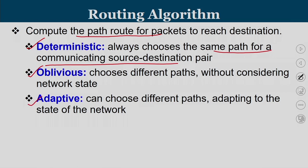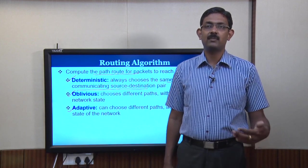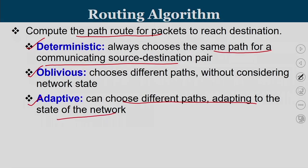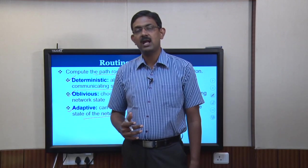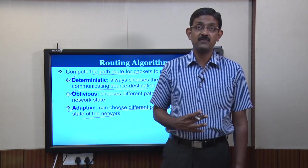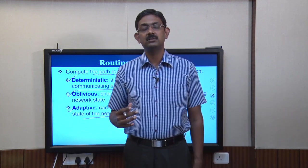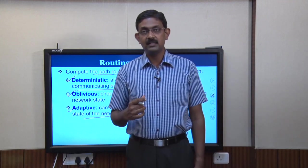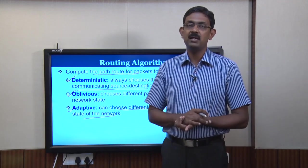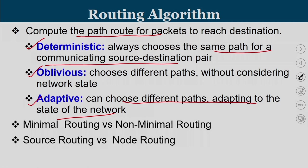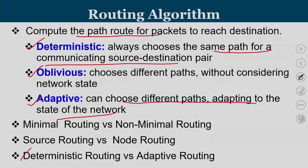The third category is adaptive routing, which is an advanced version of oblivious routing. Routes are assigned to packets based upon current network status and congestion. We choose different paths adapting to the state of the network. So: deterministic is a prefixed route; oblivious is one among many routes chosen statically; and adaptive is completely dynamic. We also have other classifications: minimal versus non-minimal routing, and source routing versus node routing.